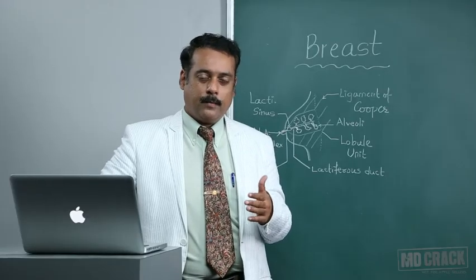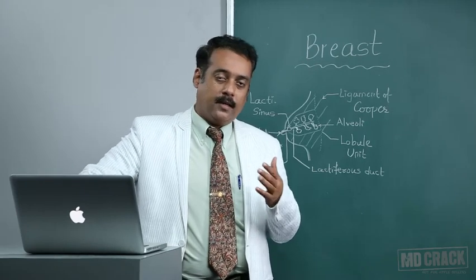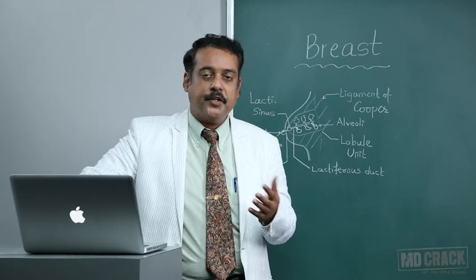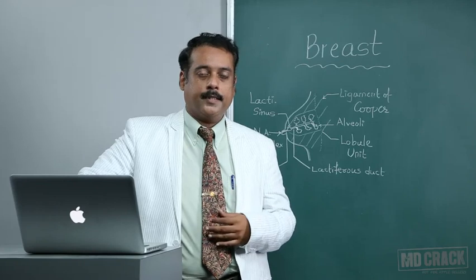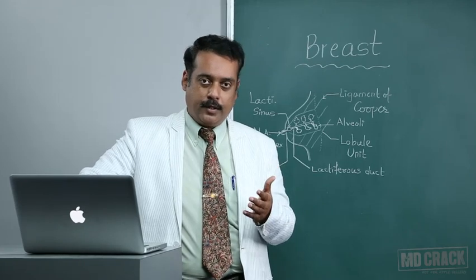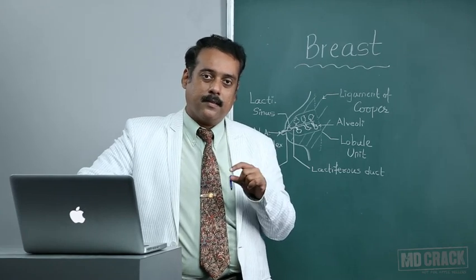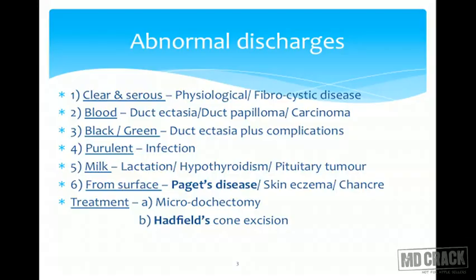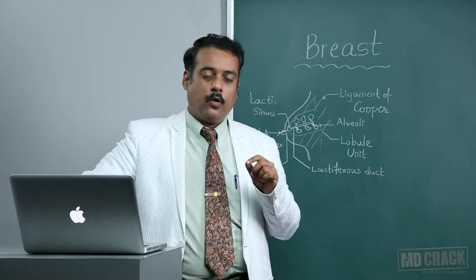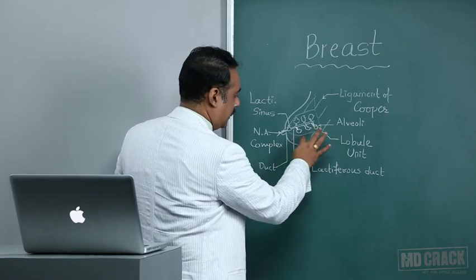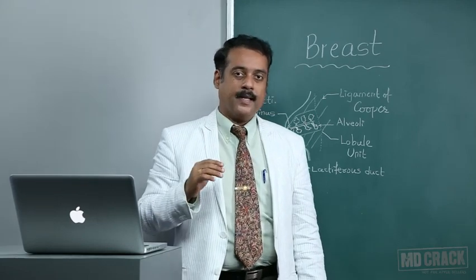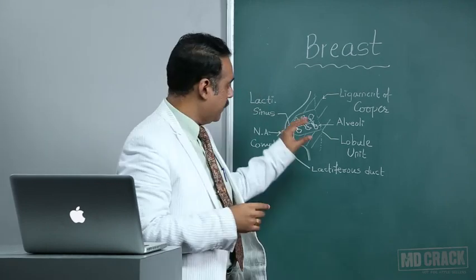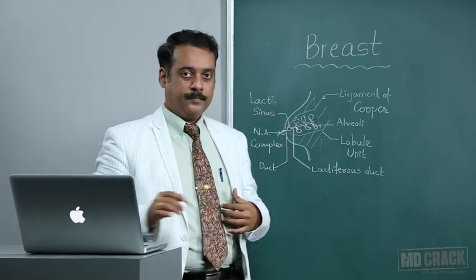Treatment for various abnormal nipple discharges varies from conservative to definitive. Skin eczema can settle by removing the root cause plus local soothing ointments. Underlying conditions like hypothyroidism or pituitary tumors can be handled accordingly. The definitive treatment is microdocectomy — excision of the entire affected unit. This involves removing the particular breast lobule causing the problem; it may be one or two units, and is considered a specialized surgery.